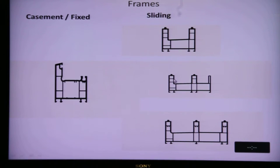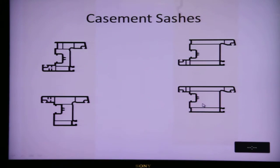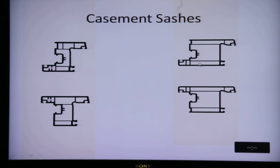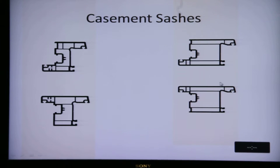What you see here is a two-track frame with an additional portion that is a track for a bug net sash — an insect screen can move on this track — so we call it a two-and-a-half track. For casement sashes, the inward opening sash is in the shape of the English alphabet Z, and the outward opening sash is in the shape of the English alphabet capital T.